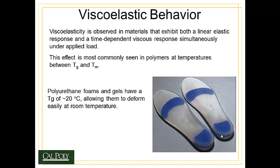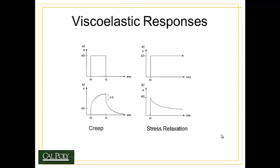Polyurethane foam is a material that has a glass transition of around 20 degrees Celsius, just below room temperature, which allows these materials to deform viscoelastically at room temperature and makes them a very good cushioning material for many applications.